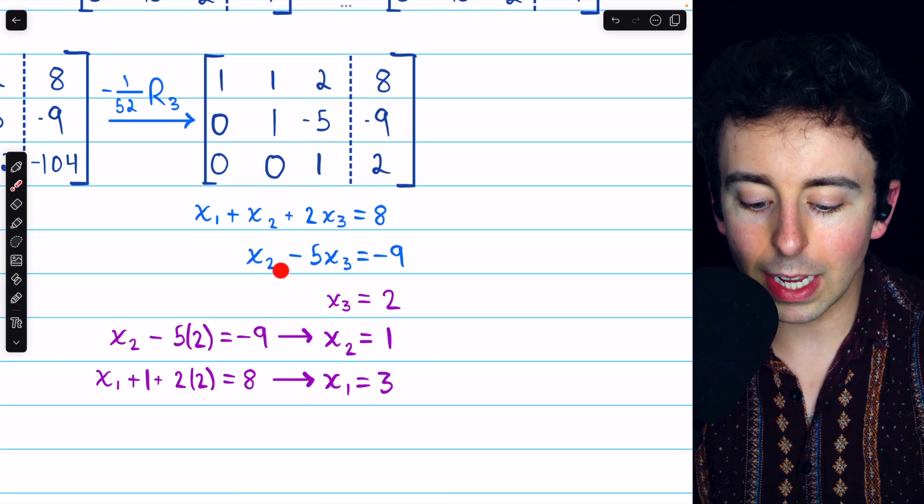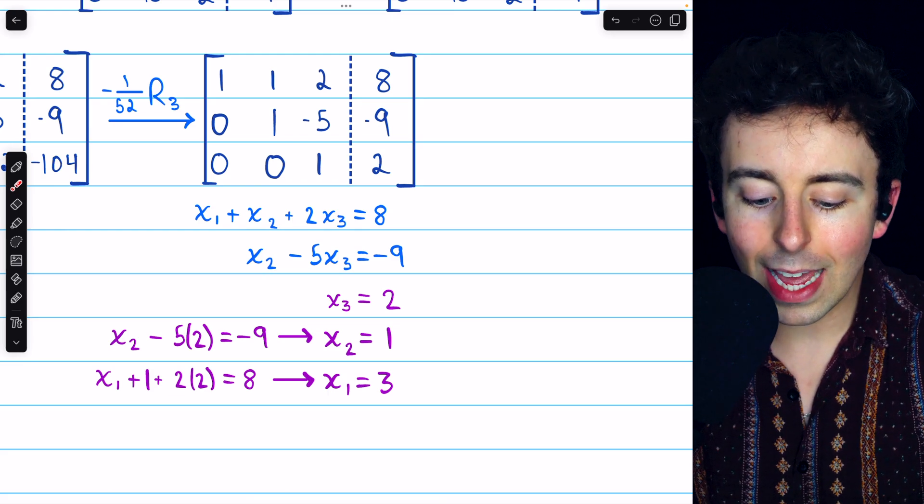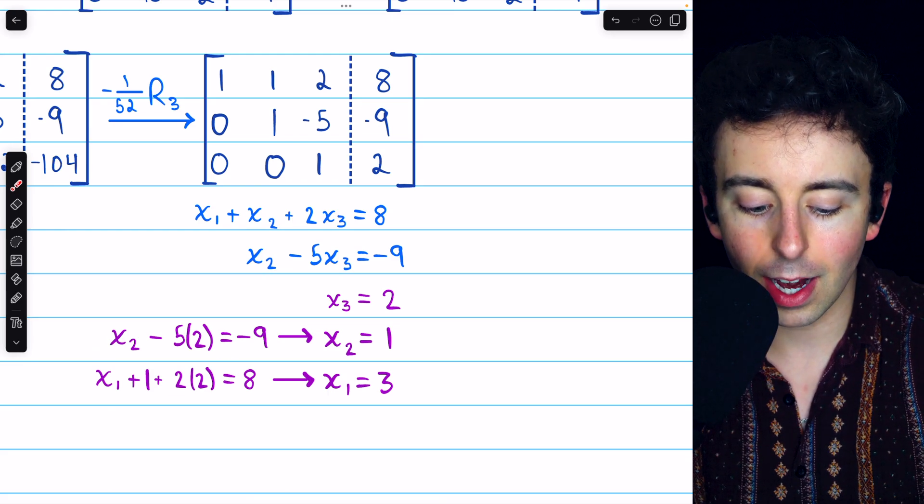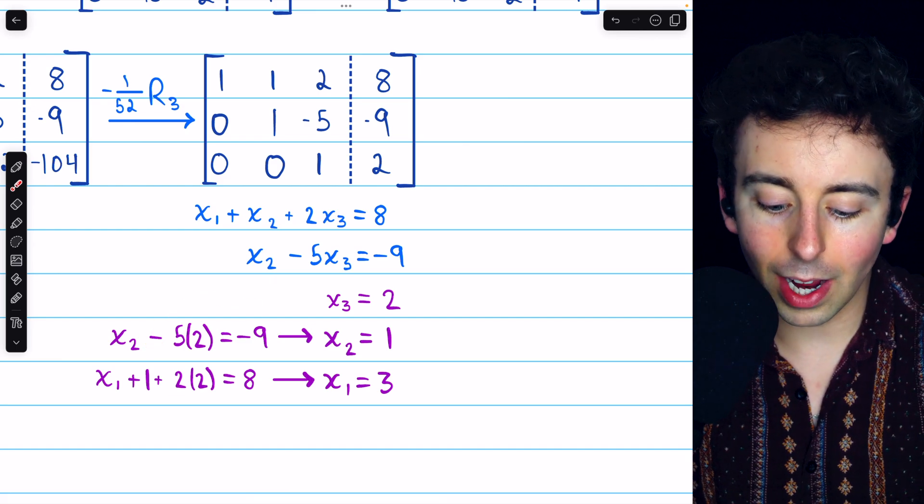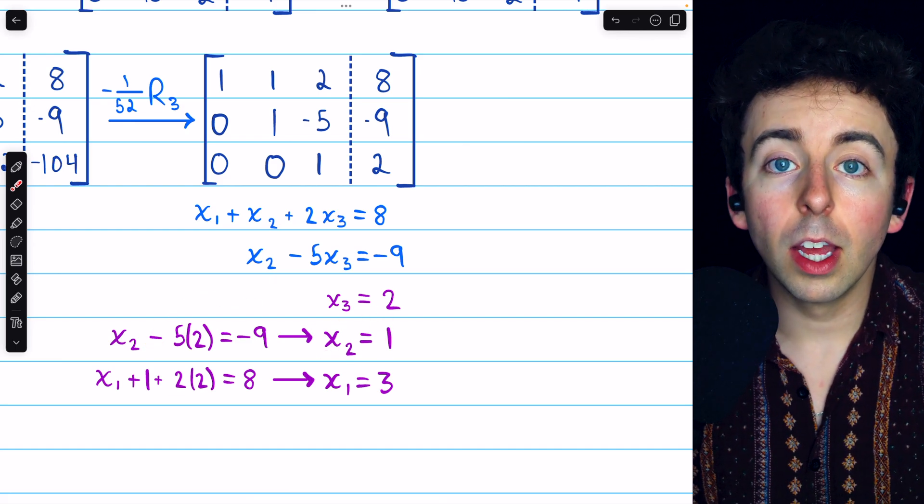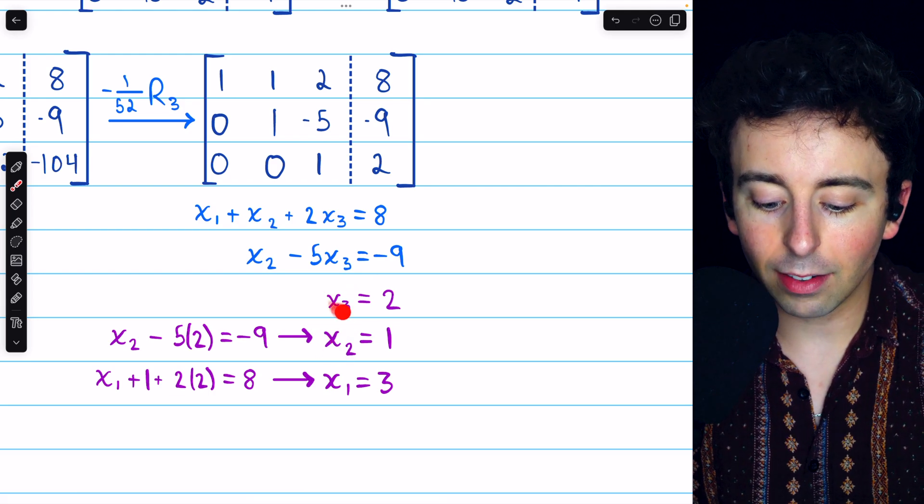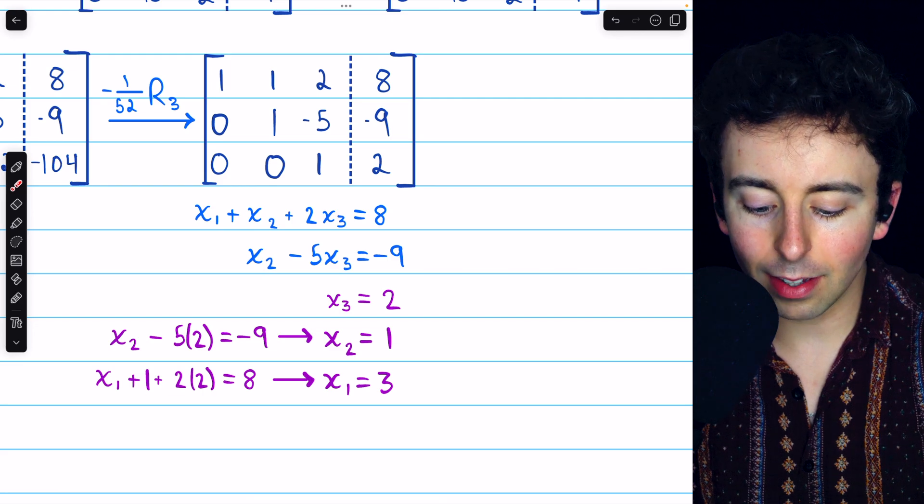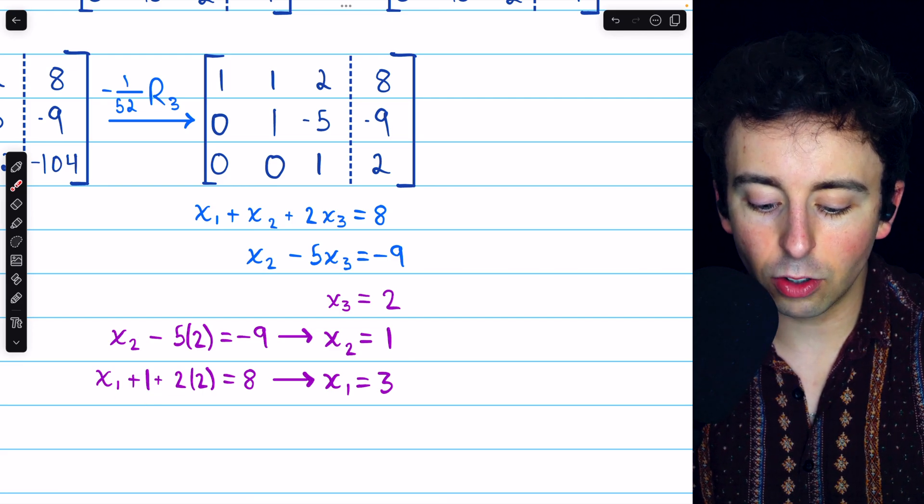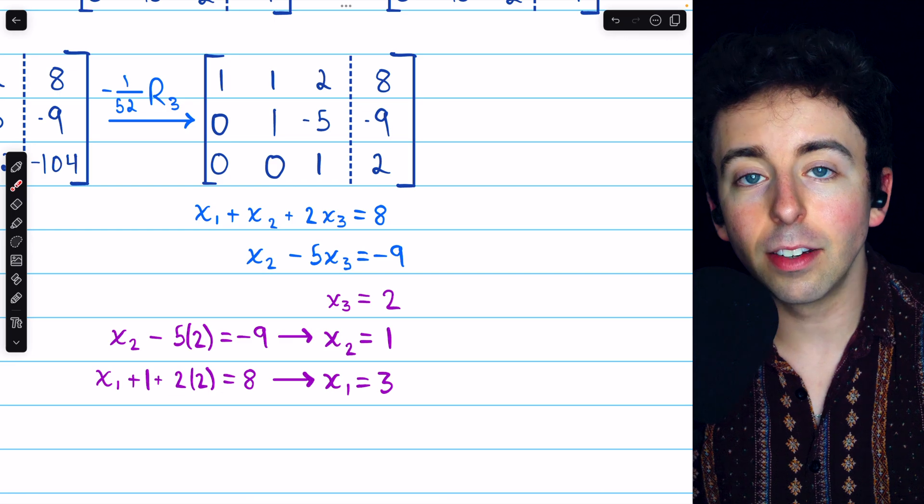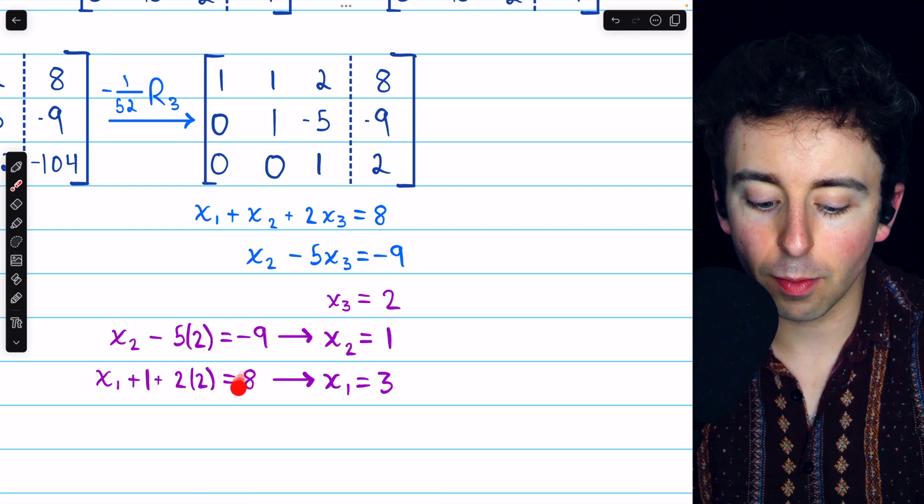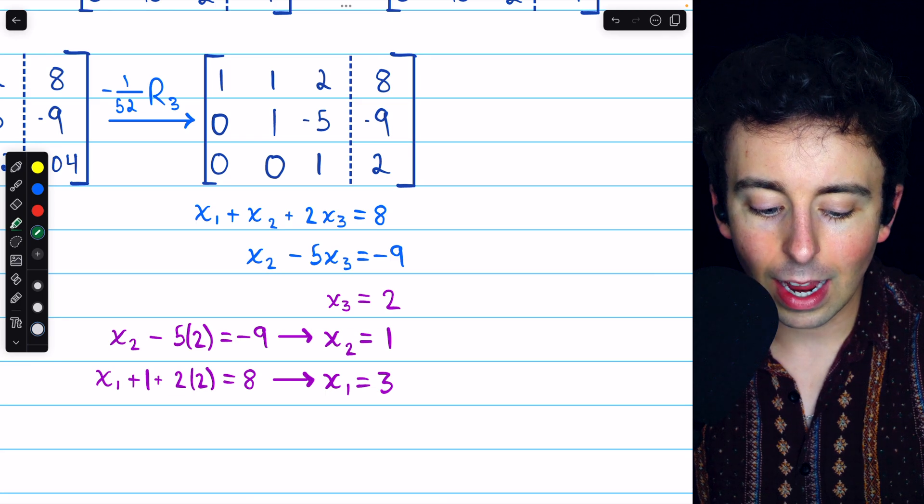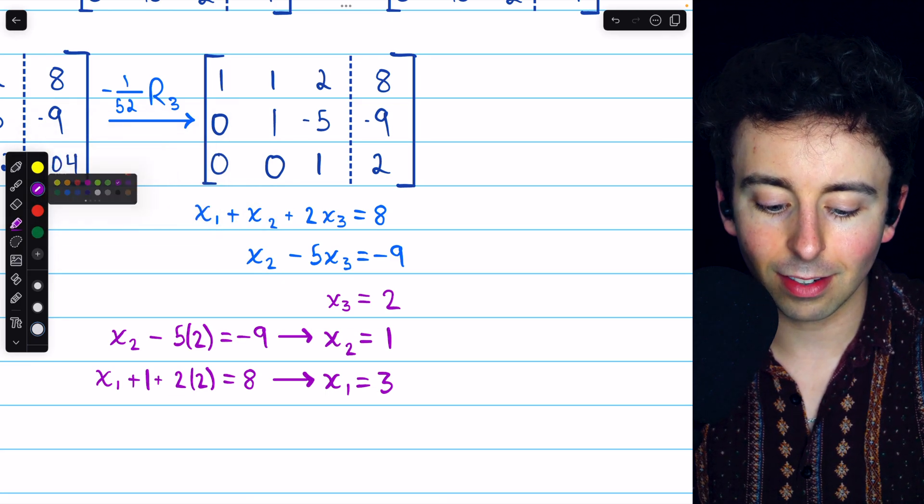Plugging x3 equals 2 into the second equation, we get that x2 minus 5 times 2 equals negative 9. So adding 10 to both sides, we find that x2 equals 1. Plugging x2 equals 1 and x3 equals 2 into the first equation, we have that x1 plus 1 plus 2 times 2 equals 8. And so subtracting 5 from both sides, we have that x1 equals 3.